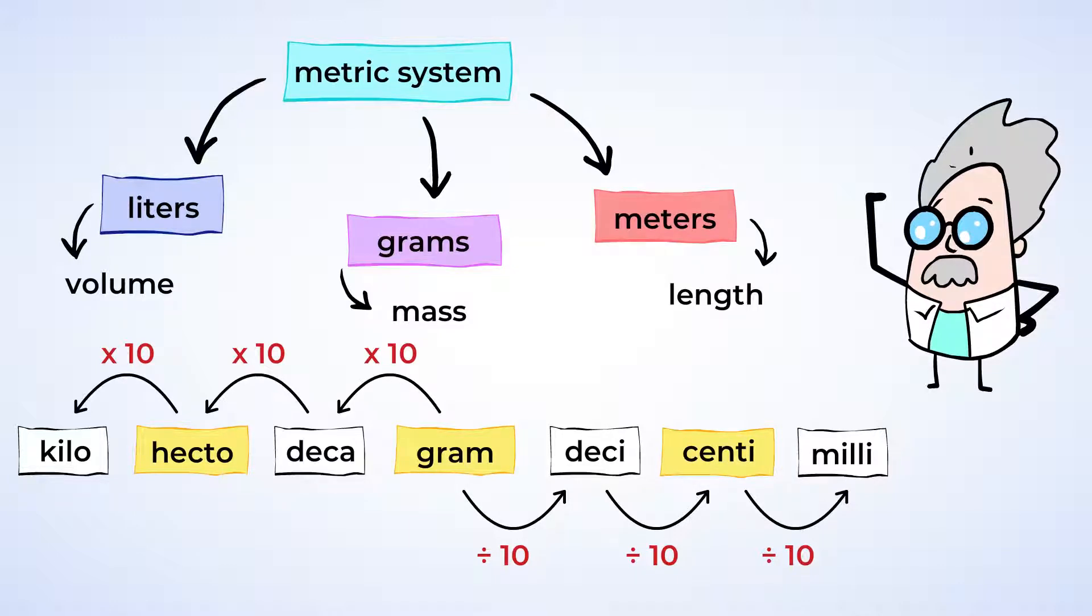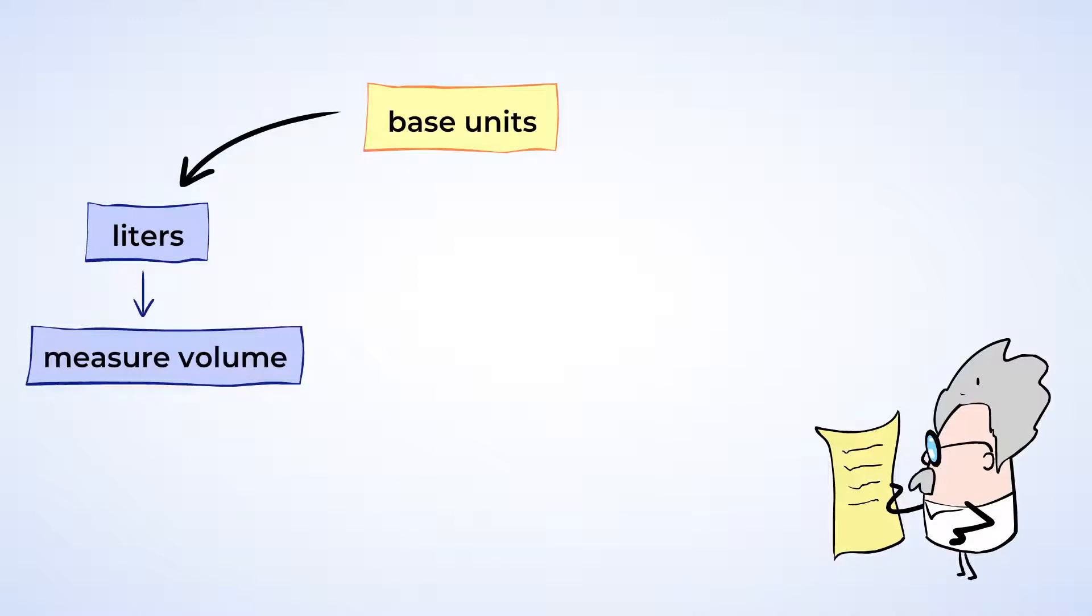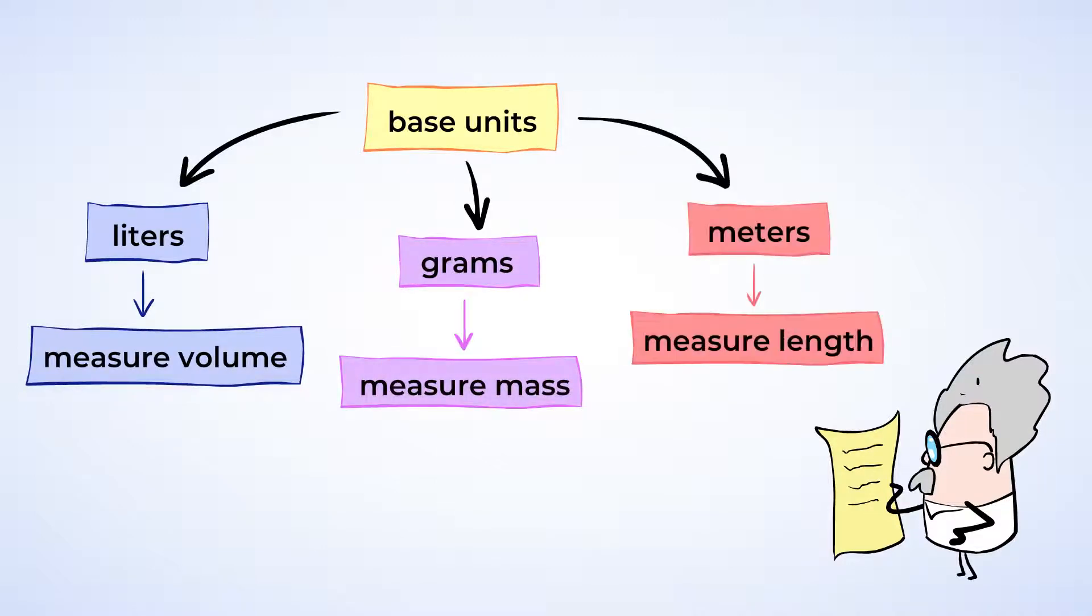Let's quickly take a closer look at the metric system before we begin converting units. First come the base units. Think of base units as the usual way we measure something. Liters are used to measure volume. Grams measure mass. And meters measure length. Volume is a measurement of how much space something takes up. And we usually think of liquids. Mass is a measurement of how much matter or stuff something has. And it's related to how much something weighs. And we use length to measure the distance between two points.